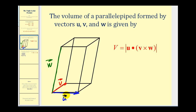So if we have the vector components of these three vectors, we can easily find the volume of this parallelepiped by finding the absolute value of the triple scalar product. To find this triple scalar product, we evaluate a three-by-three determinant made up of the components of these three vectors.